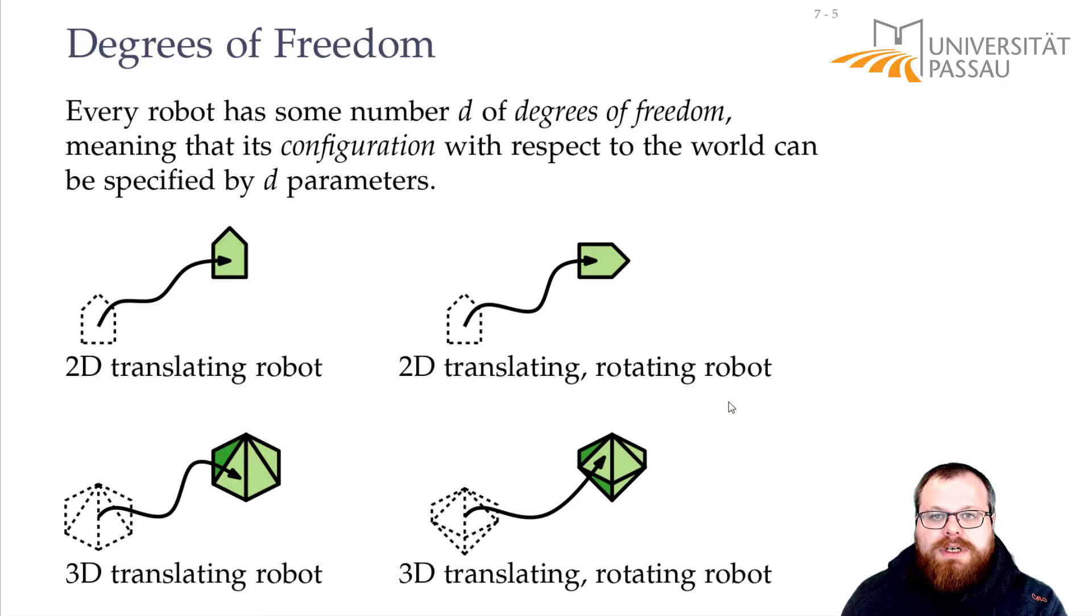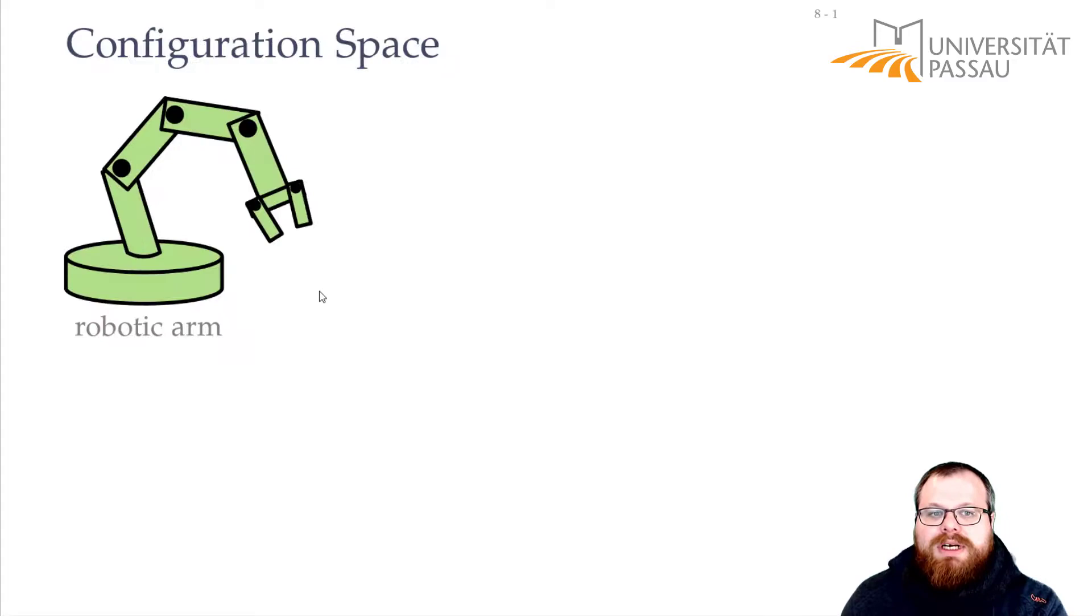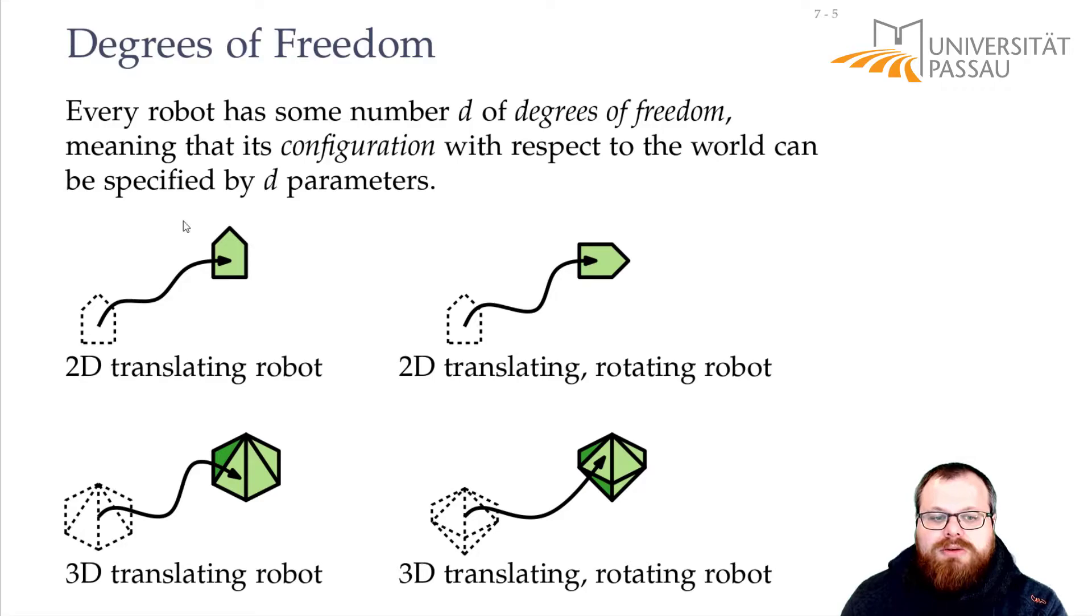Now, what does this do for our so-called configuration space? In the following, we assume that we have this model here. We have a 2D translating robot. For example, you can imagine that you have some robotic arm that moves in some field. And then it would not rotate, but it will always have the same shape.